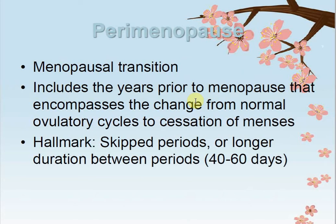In pre-menopause, what transitions and changes come in the body? It encompasses the changes from normal ovulation cycle to the cessation of the menses. Starting from when the symptoms of menopause begin to be visualized, pre-menopause includes skipped periods and longer duration between periods of 42 to 60 days.